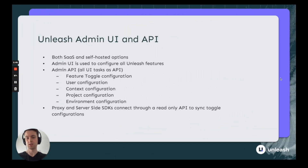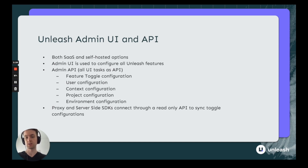Finally, the Unleash Admin UI and the Unleash API are both available as SaaS and self-hosted offerings. The Unleash Admin UI is where you can configure all of those feature toggles, environments, projects, users, and so on — everything that will then be evaluated by the SDKs and the proxy. All of these are also available as API routes. Unleash is built API-first, which means anything you can do in the UI you can do through API requests, allowing you to run it from the command line, integrate with automated systems, or have other services change feature toggle configurations.